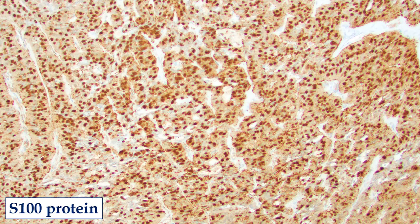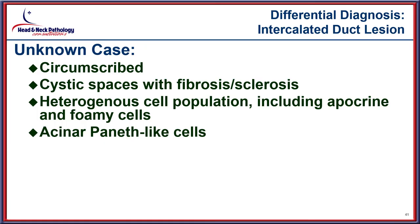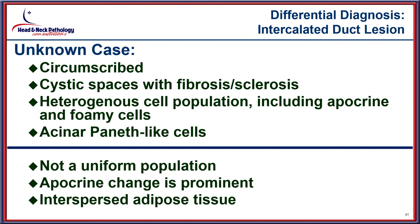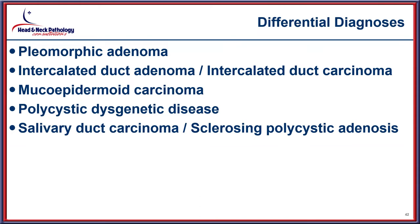The cells are uniformly and strongly positive with S100 protein. In our case, the heterogeneous rather than monotonous cell population, the quite prominent apocrine change, and the absence of interspersed adipocytes all argue against intercalated duct lesion.